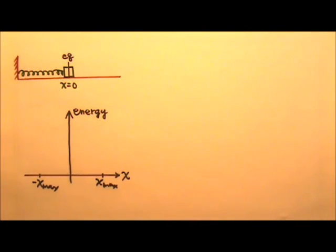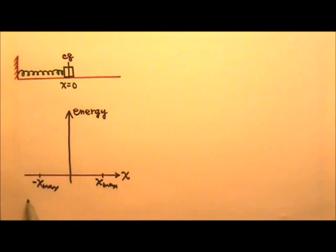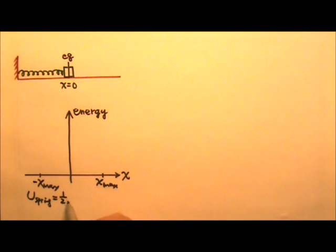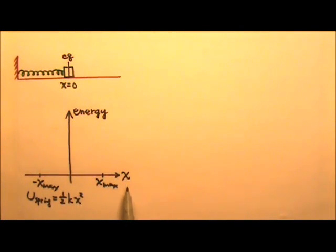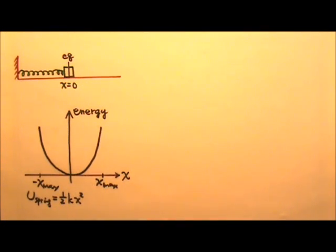Out of the different kinds of energy, the potential energy is the most convenient one to plot as a function of x, because the spring's elastic potential energy is one-half kx squared. The second degree equation tells us that the potential energy versus x graph must be a parabola, shaped just like a U.